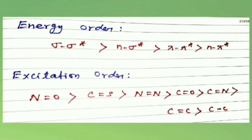The excitation order of some functional groups is: N=O is greater than C=S, which is greater than N=N (azo group), followed by the keto group, cyano group (C=N), alkene group, and C-C single bond. C=S has non-bonding electrons, and N=N has two non-bonding electrons. Non-bonding electrons lead to more excitation.